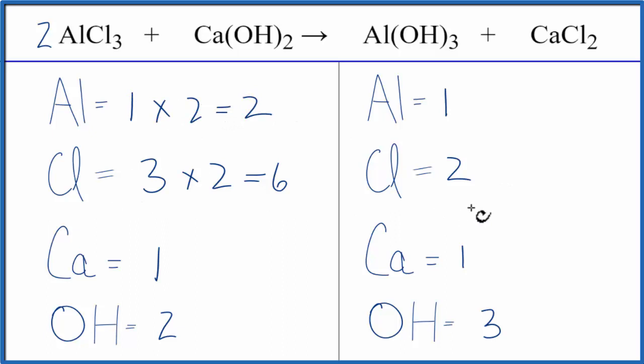So now we can fix the chlorines by putting a three in front of the calcium chloride. So we have two times three, that gives us six. So those are balanced. And then the calciums, we have one times the three, gives us three, and those are balanced.